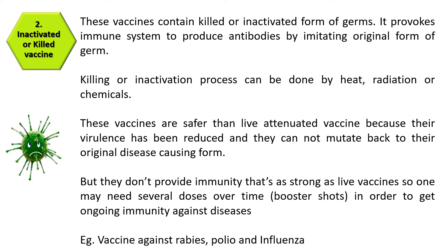Inactivated or killed vaccines contain killed or inactivated forms of germs. They provoke the immune system to produce antibodies by imitating the original form of the germ. Killing or inactivation can be done by heat treatment, radiation, or chemicals. These vaccines are safer than live attenuated vaccines because their virulence is reduced and they cannot mutate back to their original disease-causing form. However, they don't provide as strong immunity, so several doses may be needed over time. Examples include vaccines against rabies, polio, and influenza.